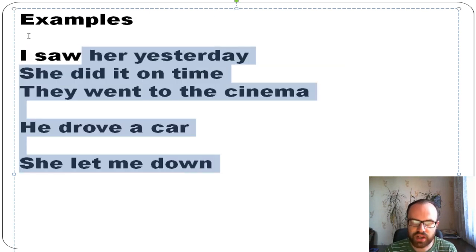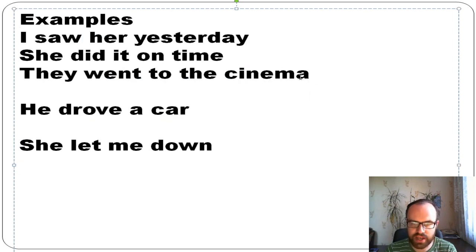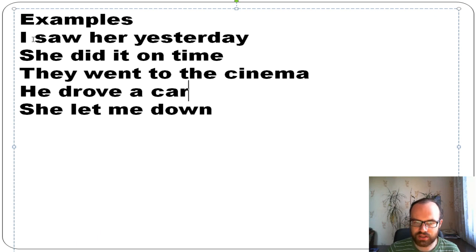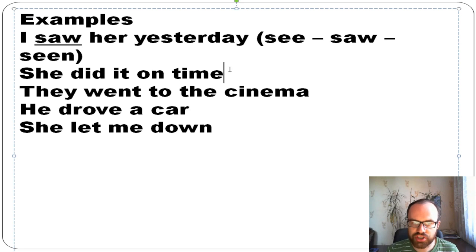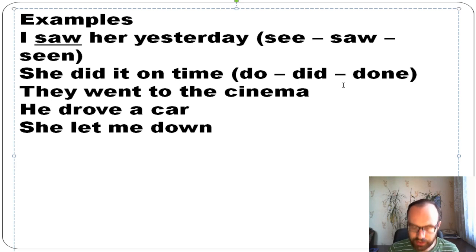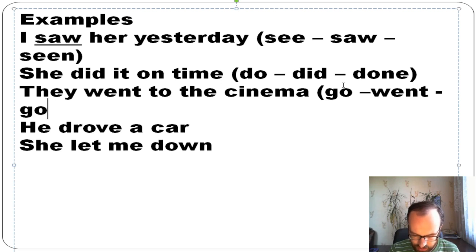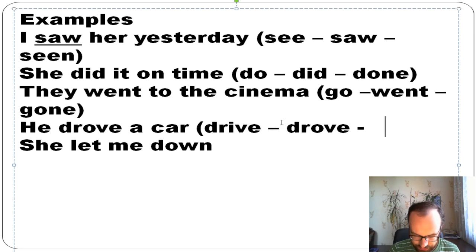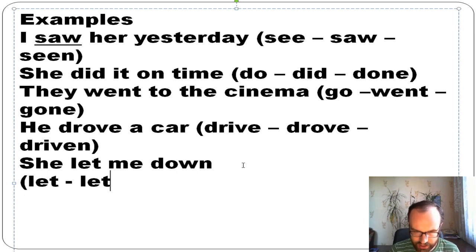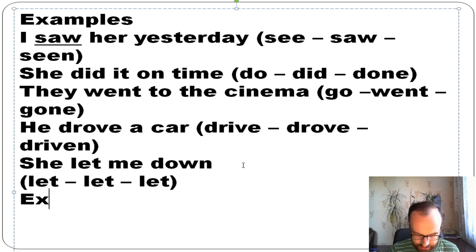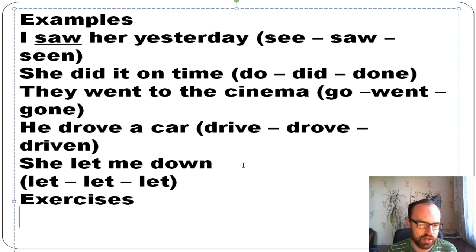Let's look at more examples. 'I saw her yesterday' — see, saw, seen. 'She did it on time' — do, did, done. 'They went to the cinema' — go, went, gone. 'He drove a car' — drive, drove, driven. 'She let me down' — let, let, let.